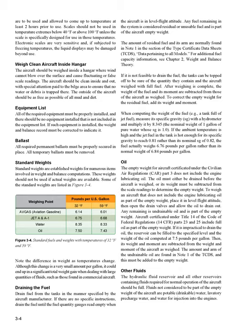If it is not feasible to drain the fuel, the tanks can be topped off to be sure of the quantity they contain and the aircraft weighed with full fuel. After weighing is complete, the weight of the fuel and its moment are subtracted from those of the aircraft as weighed. To correct the empty weight for the residual fuel, add its weight and moment. When computing the weight of the fuel — for example, a tank full of jet fuel — measure its specific gravity (SG) with a hydrometer and multiply it by 8.345, the nominal weight of 1 gallon of pure water whose SG is 1.0. If the ambient temperature is high and the jet fuel's SG reaches 0.81 rather than its nominal 0.82, the fuel actually weighs 6.76 pounds per gallon rather than its normal 6.84 pounds per gallon.